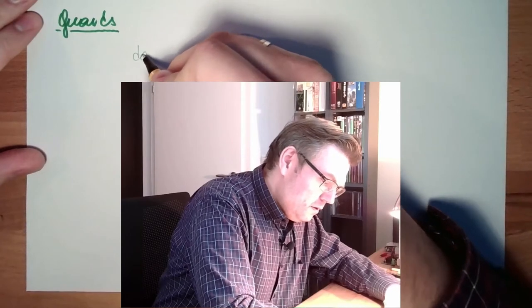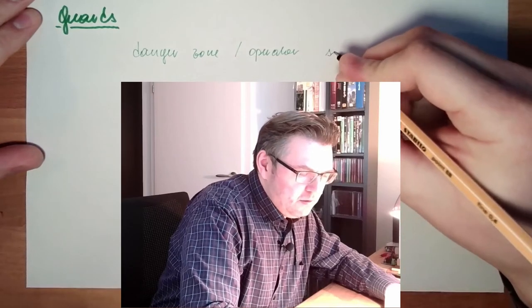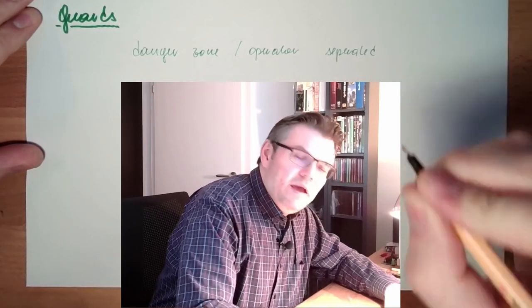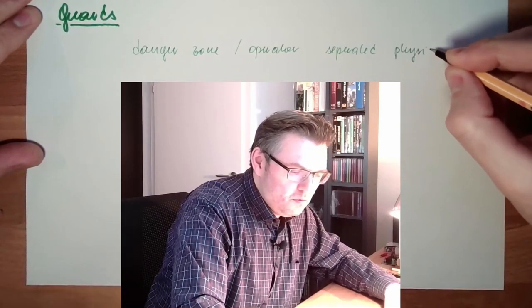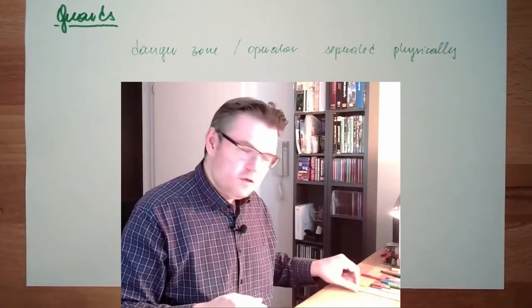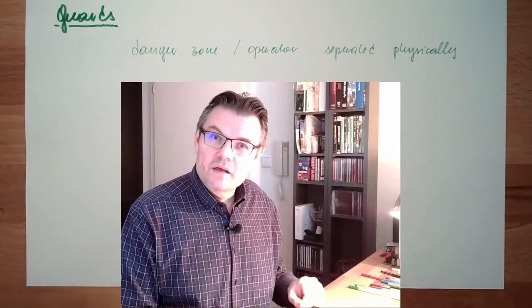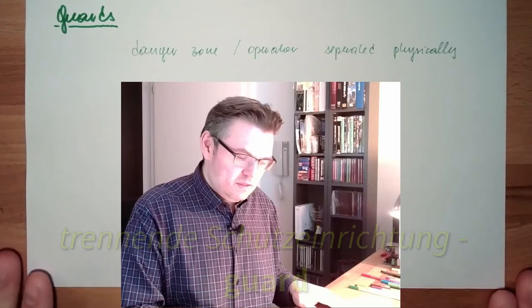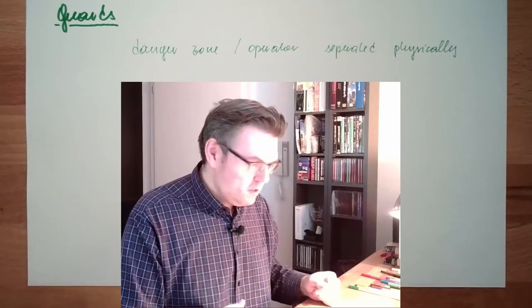Protecting the operator from reaching the danger area. So the danger, the danger zone and the operator are separated. And they are not only separated, they are separated physically. The danger zone cannot be reached. This is the sense of a guard. In German it's called trennende Schutzeinrichtung, separating protective devices. That's guard in English.